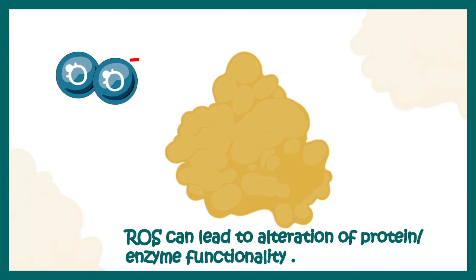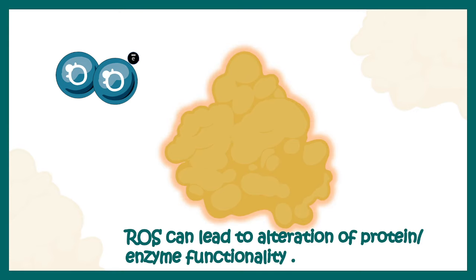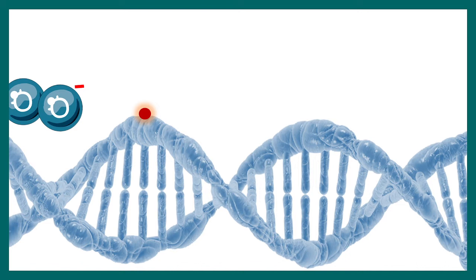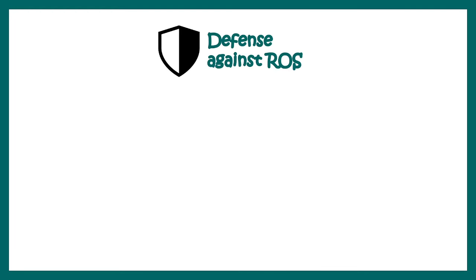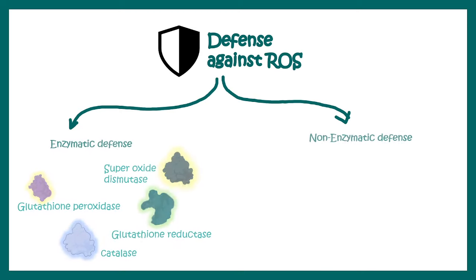Reactive oxygen species can also steal electrons from enzymes and alter their functionality. They can also create DNA damage by stealing electrons from DNA. Overall, reactive oxygen species are quite harmful, but our body can fight back through scavenging mechanisms. There are two types of defense mechanisms: one is an enzymatic mechanism, and another is a non-enzymatic defense system.